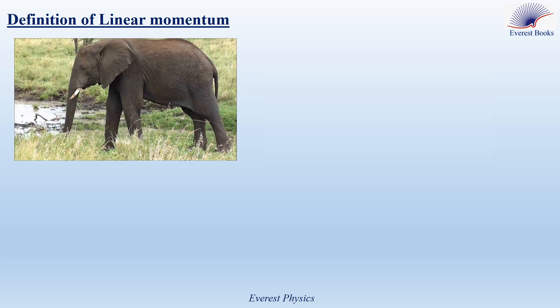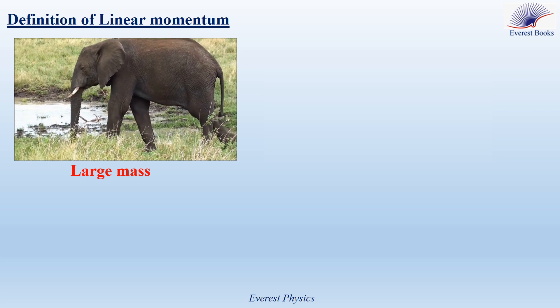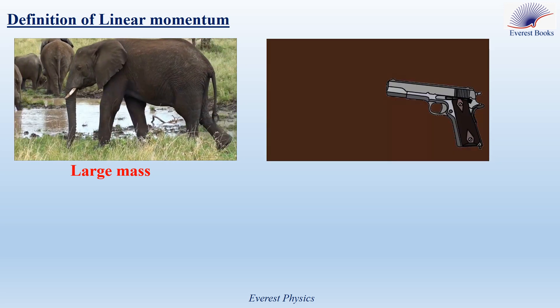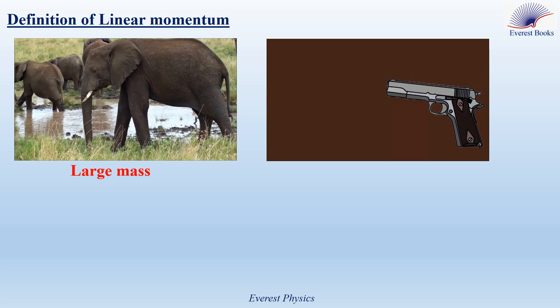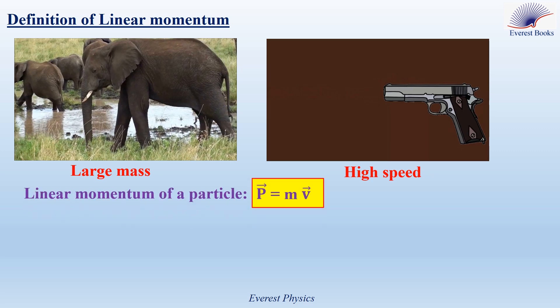Definition of linear momentum. Watch this elephant moving at a low speed. Why is it so hard to stop the elephant? The answer is it has a large mass. Watch this bullet — why is it so hard to stop the bullet? The answer is it moves at a high speed. We conclude from these observations that mass and velocity of an object play a major role in studying its motion. The product of these two quantities represents a physical quantity called the linear momentum of the object. So here we want to start with the linear momentum of a particle.